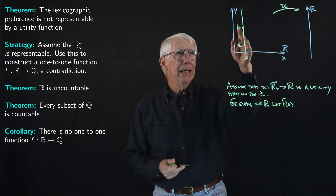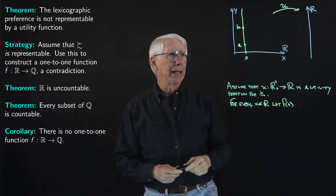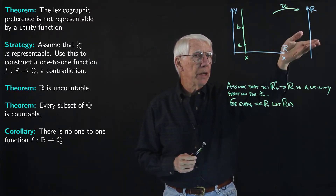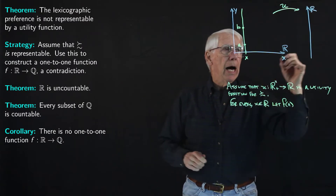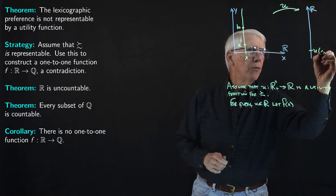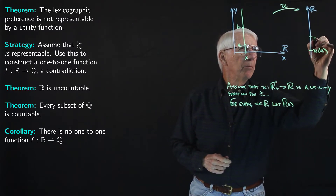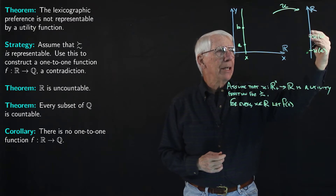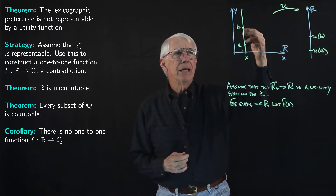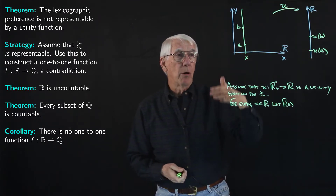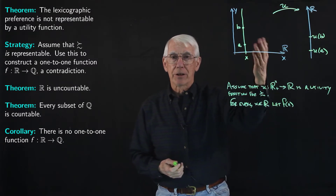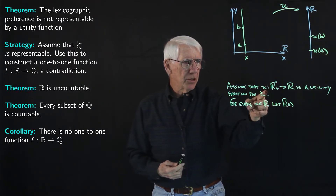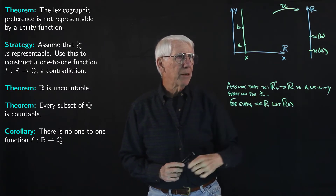A is a pair (x, y) and B is another pair (x, y'). The utility function maps A to a real number and B to some other real number, and the utility number for B is bigger than the utility number for A because B is strictly preferred to A — as we established in the first part of the lecture on the geometry of lexicographic preference. So U(B) is strictly bigger than U(A) because U is a utility function for the lexicographic preference.